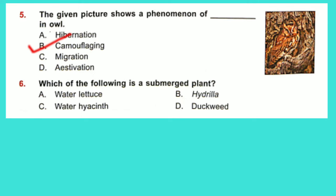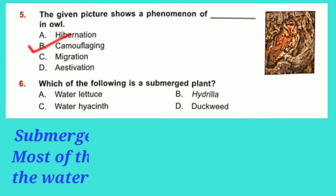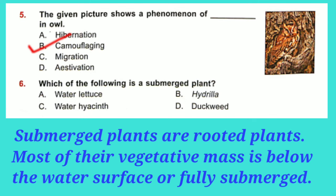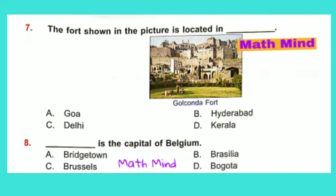Question No. 6: Which of the following is a submerged plant? Submerged plants are rooted plants with most of their vegetative part below the water surface, or fully submerged. So Option B is correct: Hydrilla.